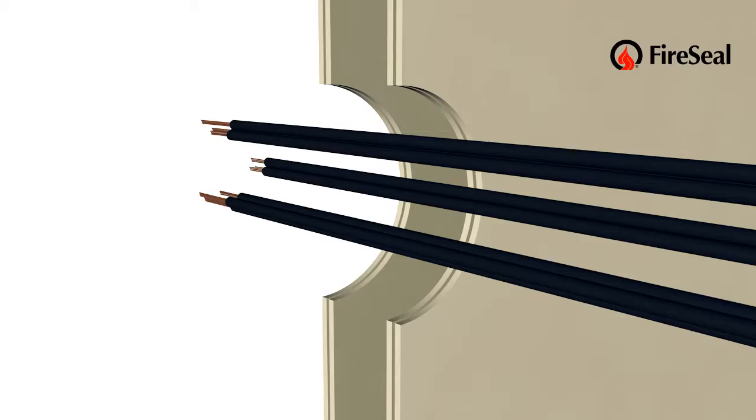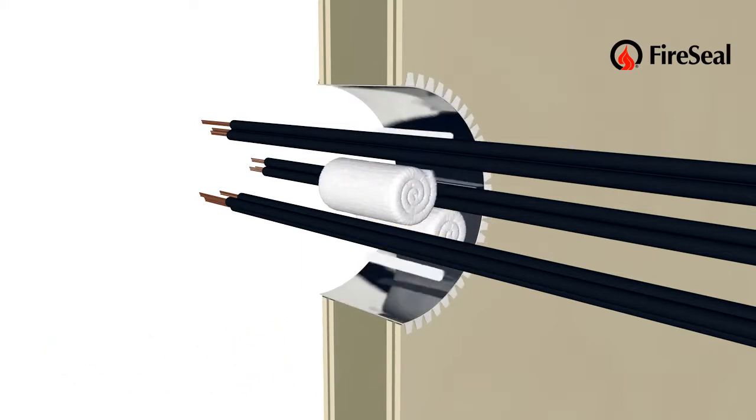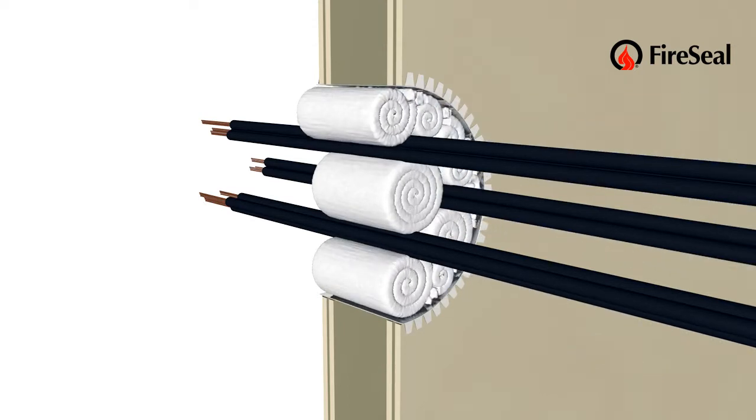Start by cleaning the opening from debris. In plasterboard wall, install a metal plate. Now pack the space between the elements and the surrounding part of the opening with blanket D24B.